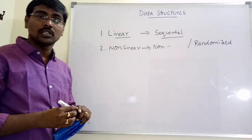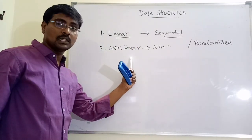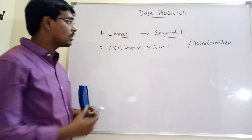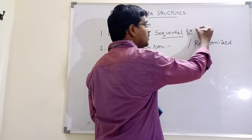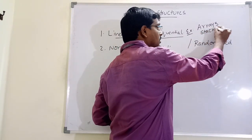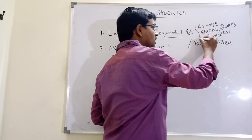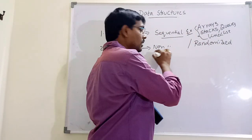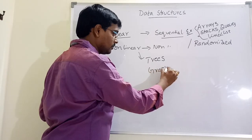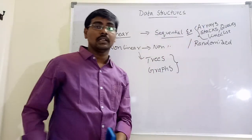In nonlinear data structures, wherever a free memory location is available, at that memory location we place the elements. So placing elements in sequential manner gives linear data structure, and placing elements in a randomized manner gives nonlinear data structure. Under linear data structures, the different types are arrays, stacks, queues, and linked lists. Under nonlinear data structures, the examples are trees and graphs.